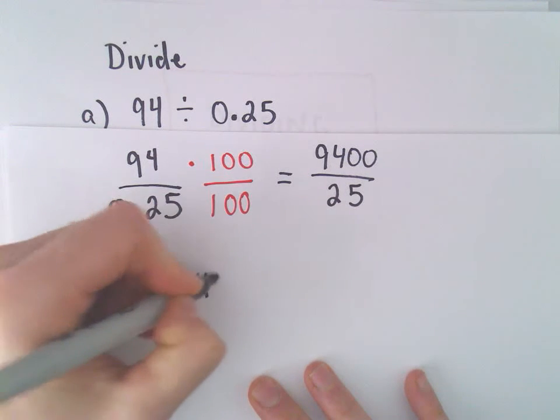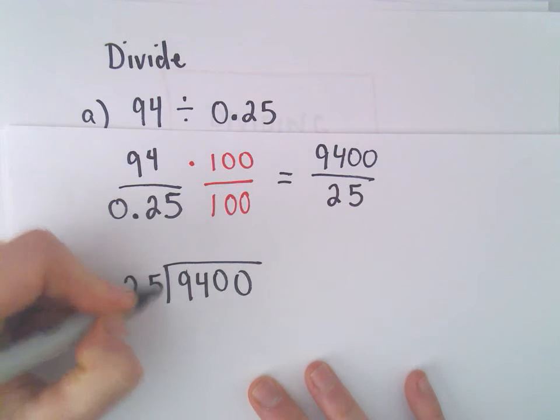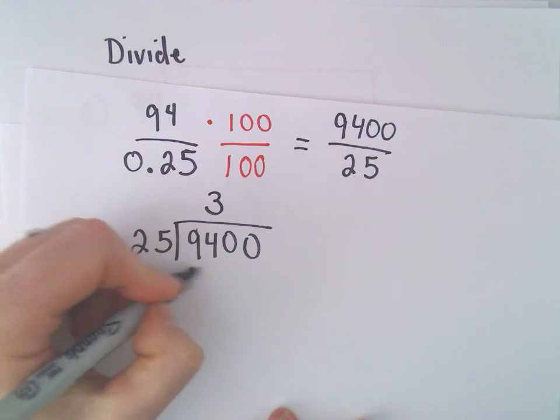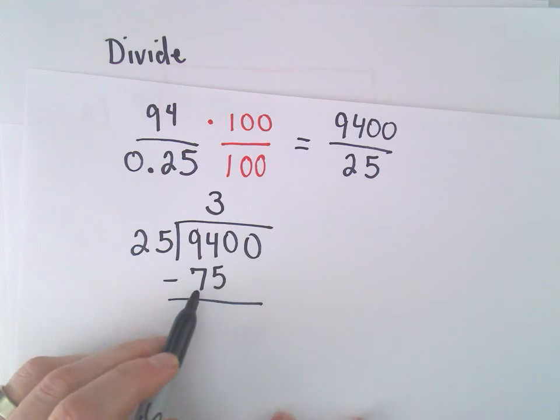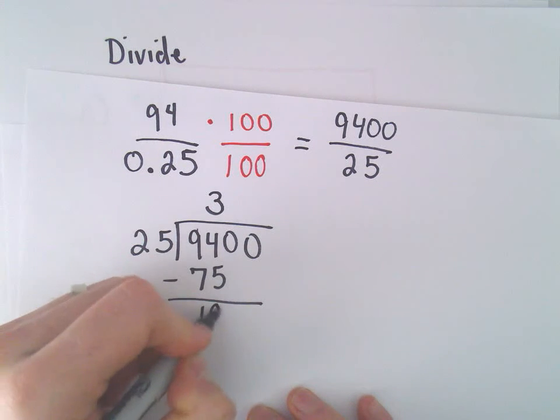I always think about quarters and money. We could do 3 times 25, that would give us 75. So 94 minus 75, if it was 95 we would get 20, but it's one less so we'll get 19.